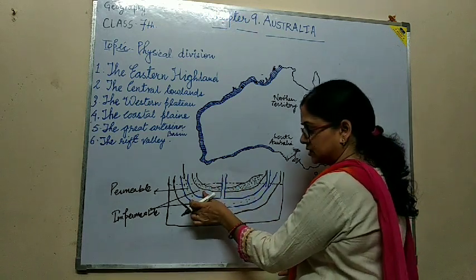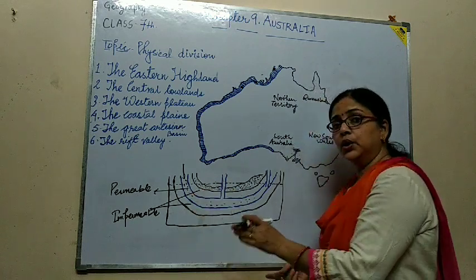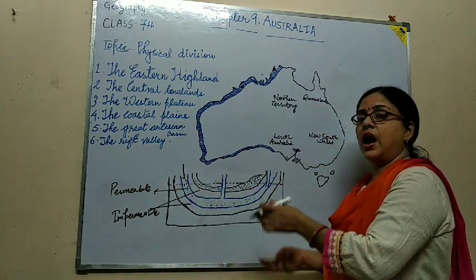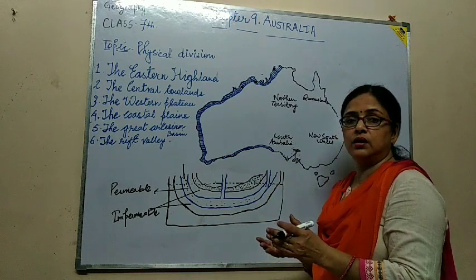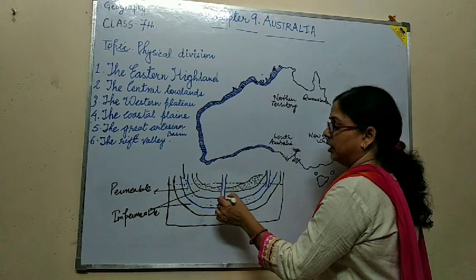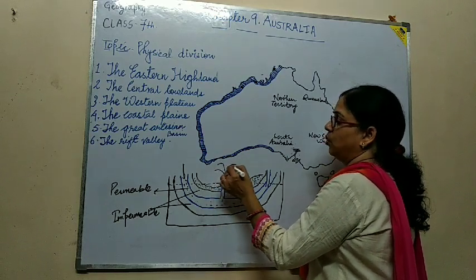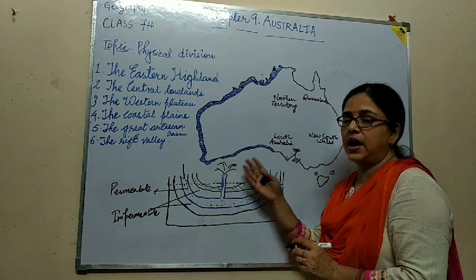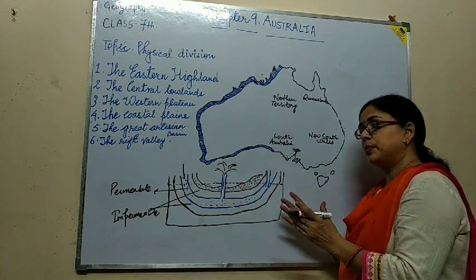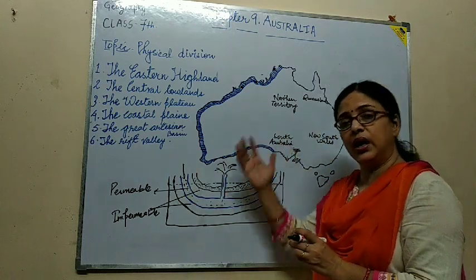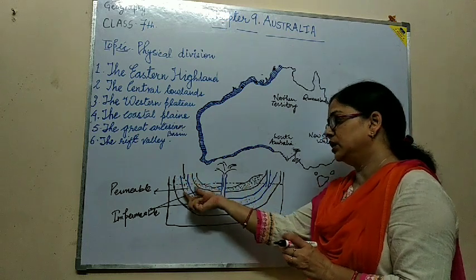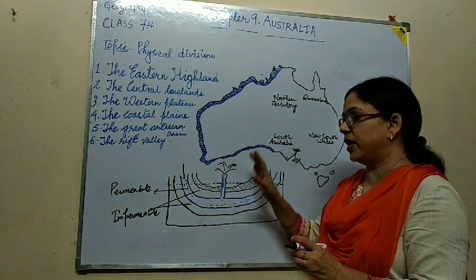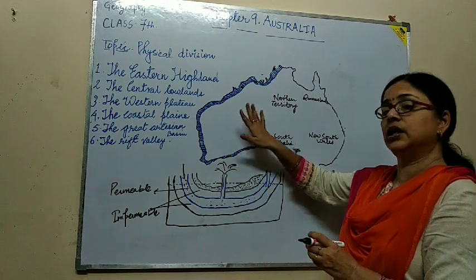Now these two layers do not allow the water to go through anywhere else, so in this layer the water is collected. Once the level of water becomes high, it gushes up in the form of a fountain on the earth's surface. This water is used for irrigation as well as for cattle rearing. So the purpose of digging this artesian well is to collect the rain water in the layer of porous or permeable rock, and by this the rain water is collected and utilized in Australia.